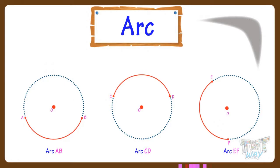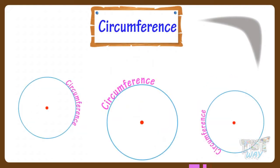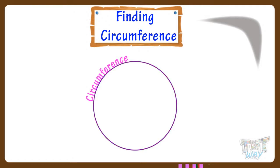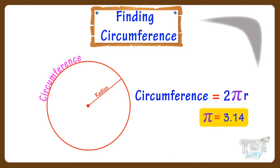So kids, we learned about a circle, its radius, diameter, chord, arc, and circumference. Now let's learn how we can find out the circumference of a circle. We know circumference is a distance around the boundary of the circle, like the perimeter of a square. For a circle, it's the circumference. If we have a circle and we know its radius, we can find its circumference by using the formula 2πr, where π equals 3.14.